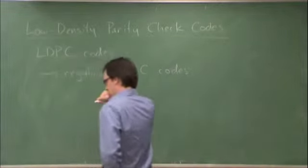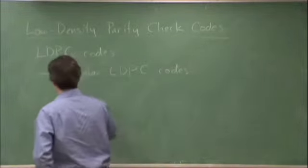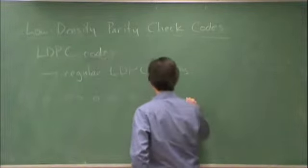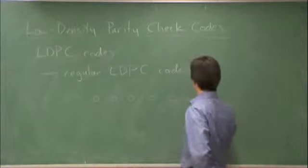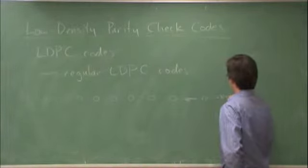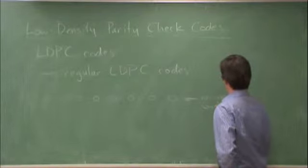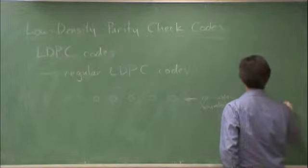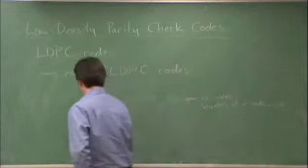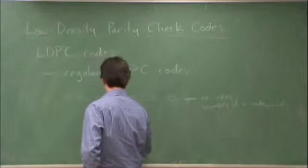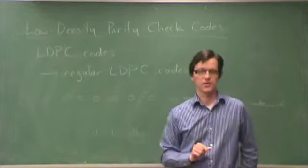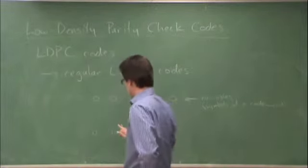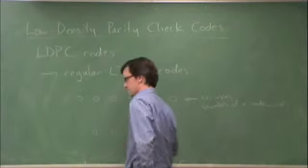If we have a code, we can express the symbols of the code as variable nodes. These are variable nodes in a factor graph, these are symbols of a code word. And we can express the parity checks as basically parity constraints. Each row of the parity check matrix H corresponds to one of these parity checks.